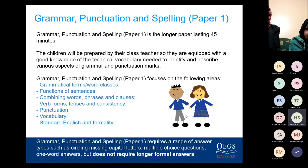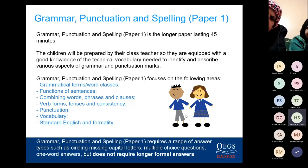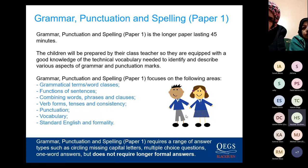In Year 6, we tend to focus on the following areas: grammatical terms and word classes, functions of sentences, combining words, phrases and clauses, verb forms, tenses and consistency, punctuation, vocabulary, and standard English and formality. The children are tested on everything they have been taught throughout Key Stage 2. Obviously in Year 6 we revise everything and go back over it all, but it could be anything they've been taught within grammar from Year 3 upwards.